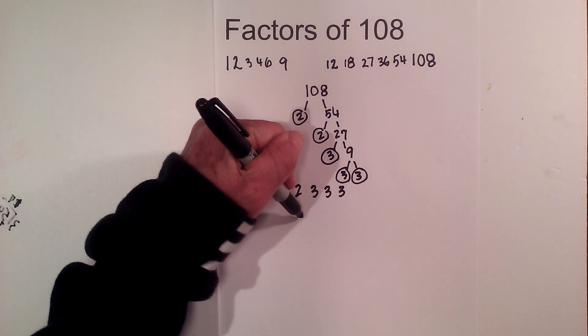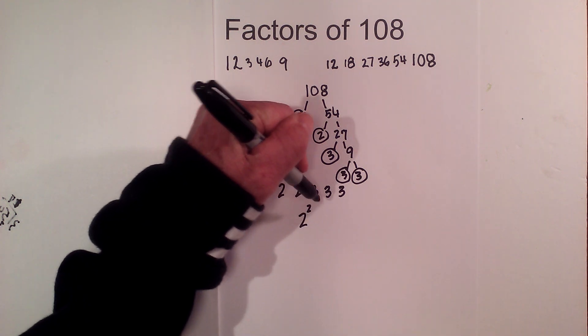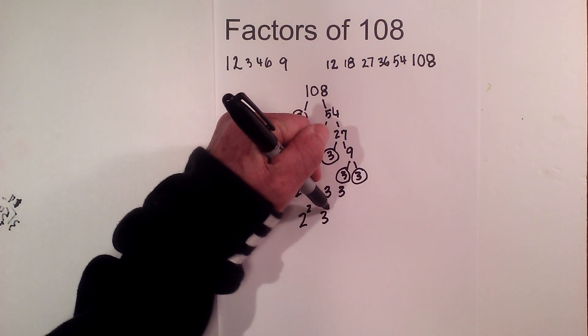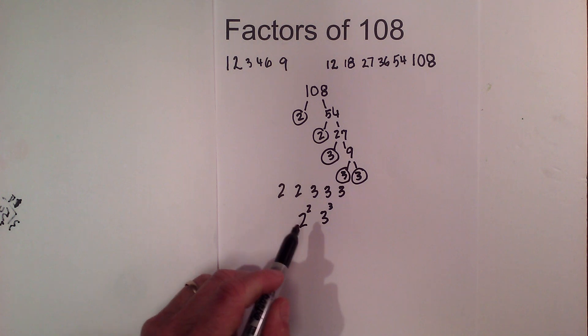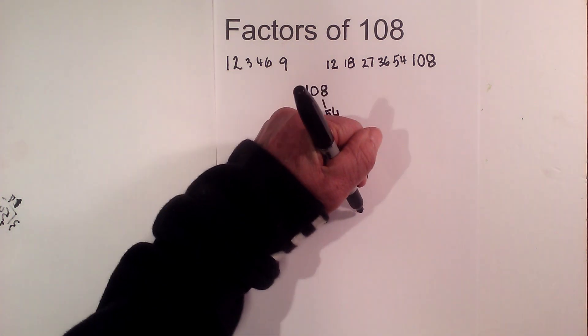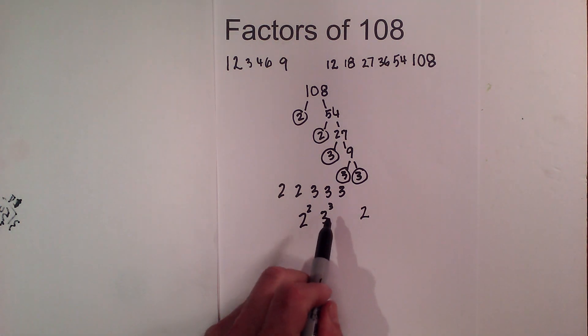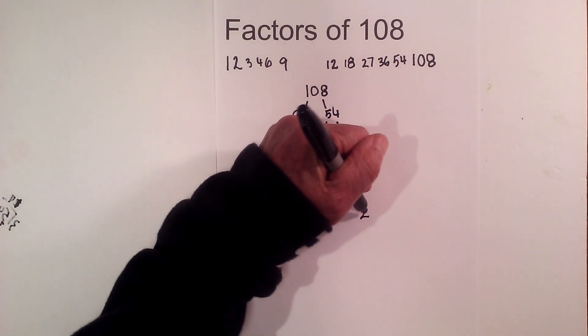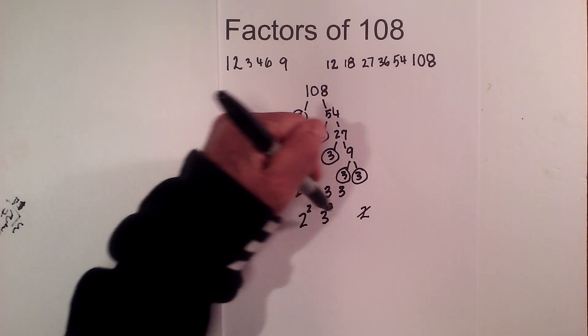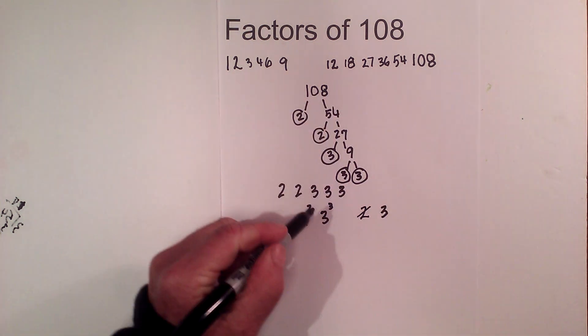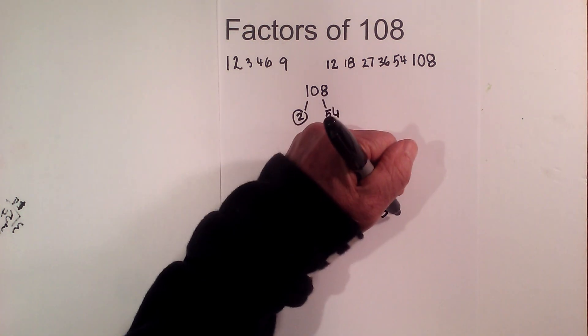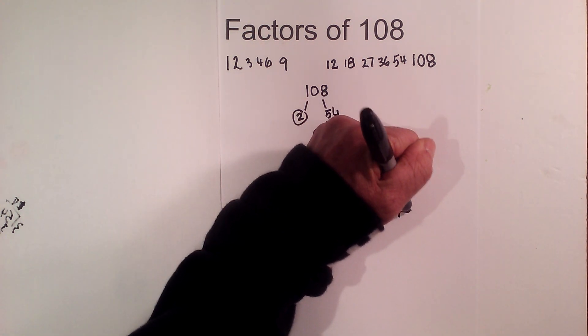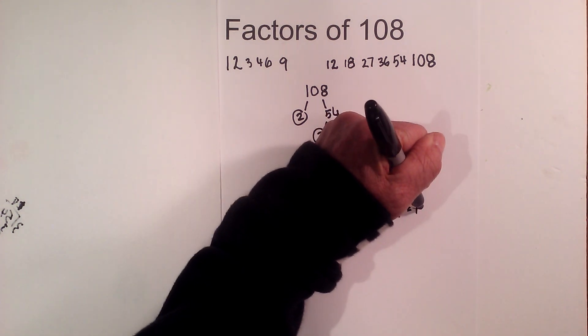Now here's the trick. I can rewrite this as 2 squared and 3 cubed. So I take the exponent and add 1. So 2 plus 1 is 3. The exponent here is 3 because it is cubed. Add 1 and that becomes 4. So when you multiply these together, 3 times 4 equals 12.